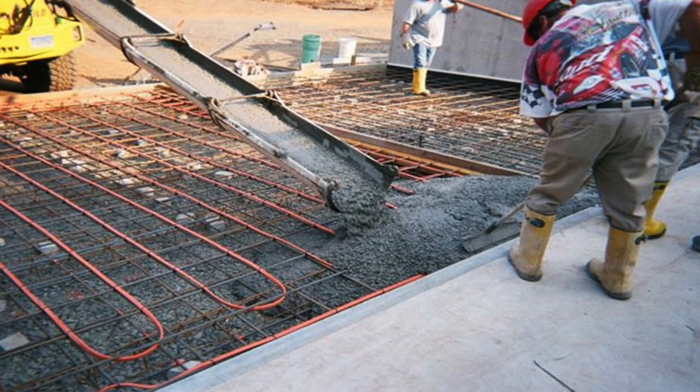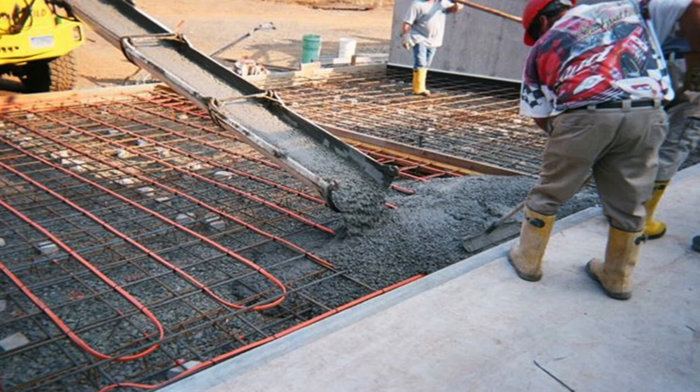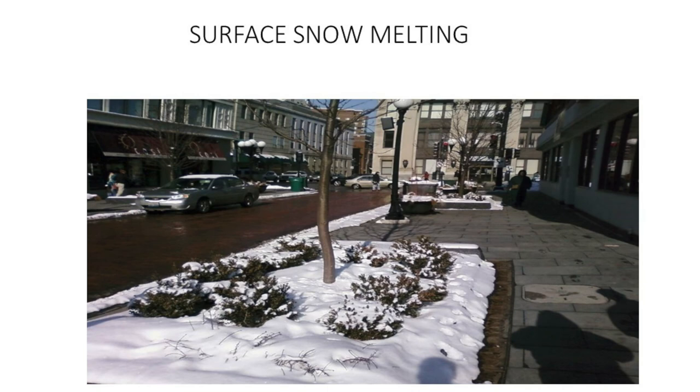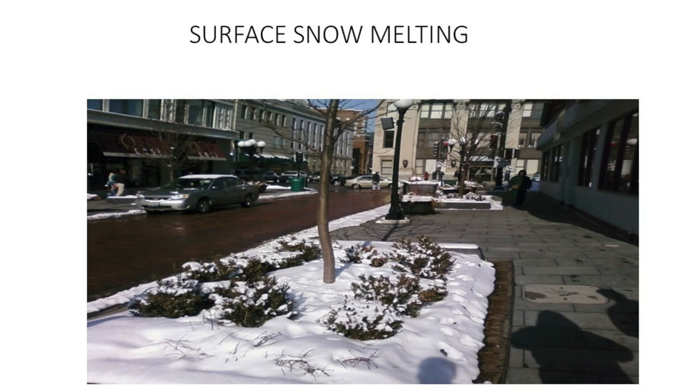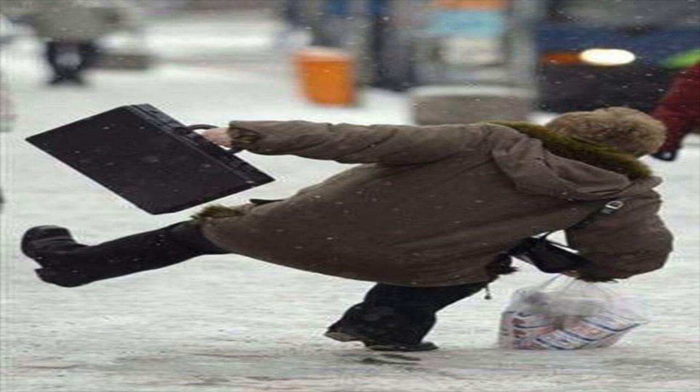Now let's get into surface snowmelt. Surface snowmelt involves placing heating cables in the ground, covering or pouring concrete over them, then energizing the system in winter to prevent snow and ice buildup on walkways, driveways, or stairs. In cold weather areas, snow buildup on walkways is a major concern. When walkways are covered with snow and ice and people are walking on them, it creates a very dangerous situation.